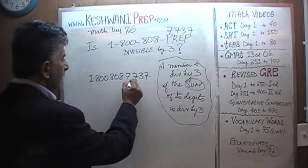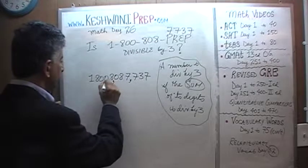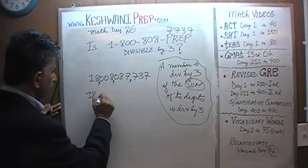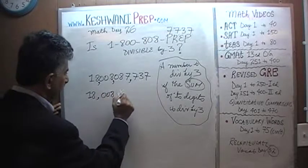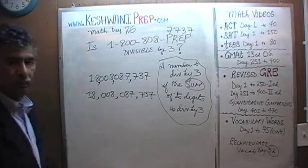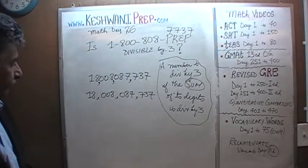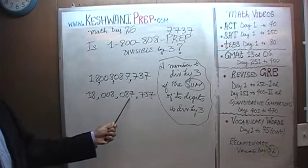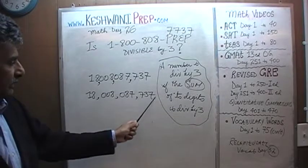So, here we have 3, 1-2-3, here we have 3, 1-2-3, there we go. So this translates into something like this. And now we will worry about what that number actually is. That number is 18,008,087,737.